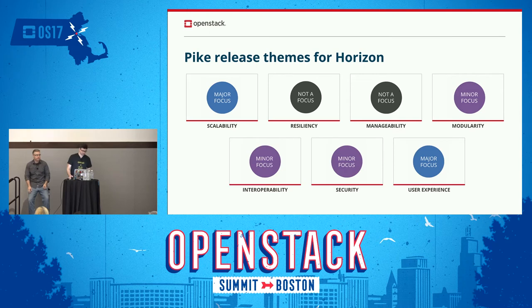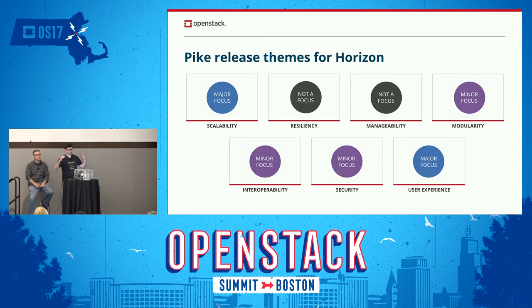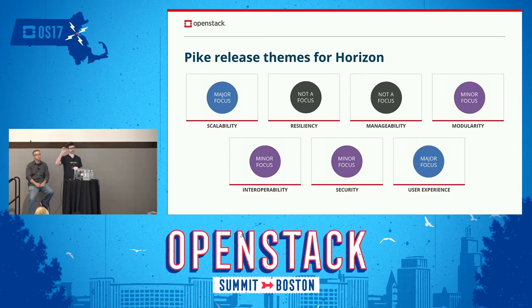The themes we've been going with for these releases have been pretty consistent for the last couple of cycles and are continuing along the same lines for Pike and Queens — where the major focuses are on scalability, addressing how you can operate Horizon at the upper limit, not just hundreds of instances but thousands and tens of thousands in an efficient manner, and the user experience — how quickly can you do stuff and how accessible is the information. Things like splitting out panels to make them more discoverable and putting key actions in the user menu drop-down all come under user experience.